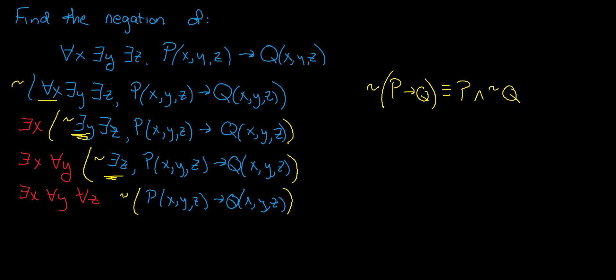So my final answer would be there exists an x such that for all y and all z, p of xyz and not q of xyz.